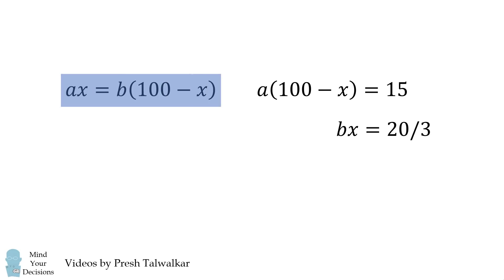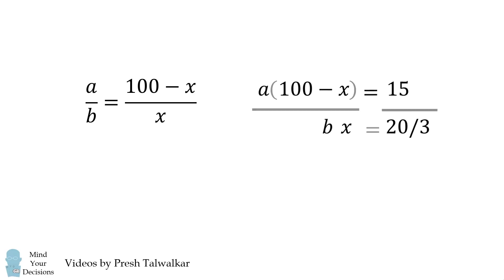From the first equation, we'll divide both sides by b and both sides by x. We thus solve for the ratio a over b. We then take the third equation and divide it from the second equation. We thus get the following equation.